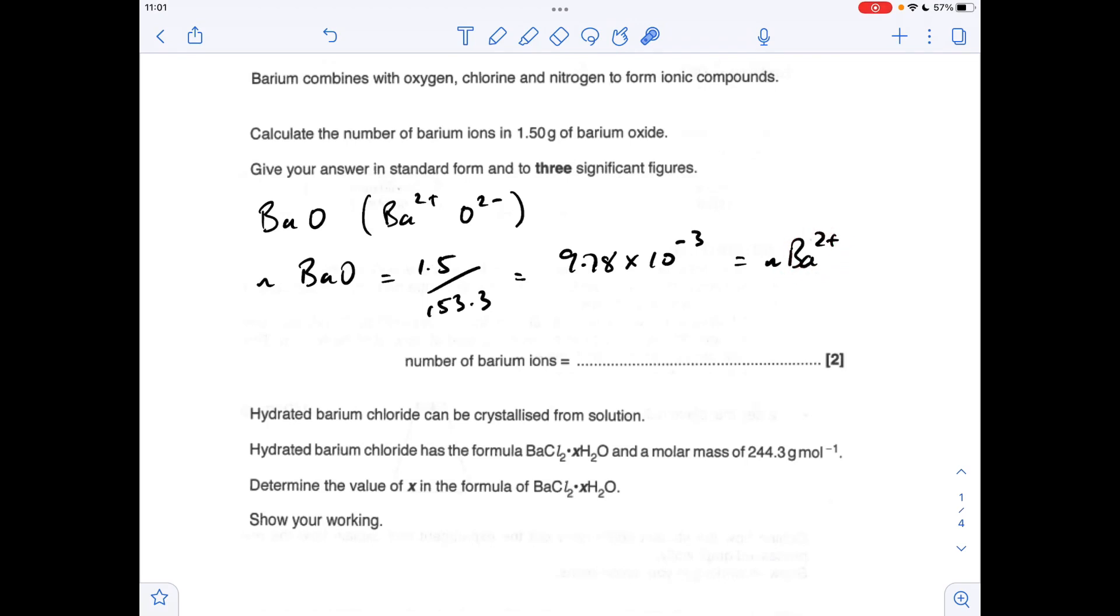To turn that into a number, we just multiply this by Avogadro's number, which in standard form, under three significant figures, comes out at 5.89 times 10 to the 21.